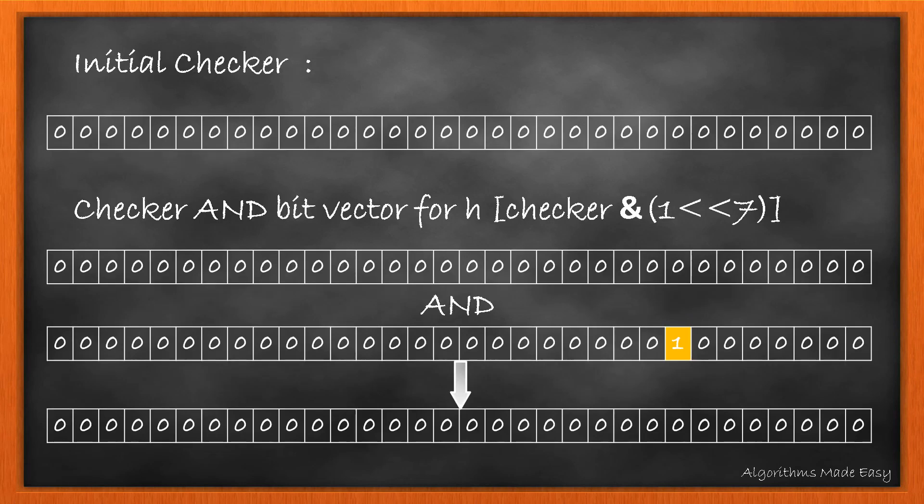At the beginning, the checker bit vector will have a value of 0. At this point, we have the checker and the bit vector of character 'h'. If we perform an AND operation on both,